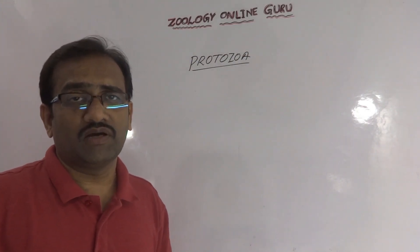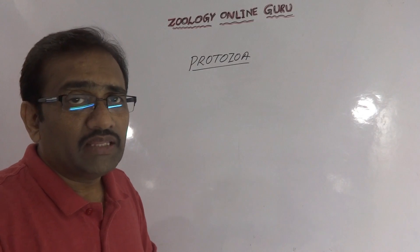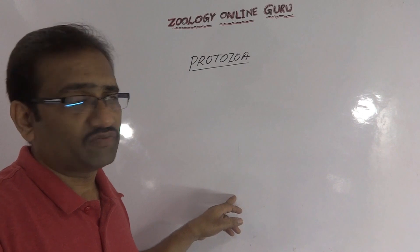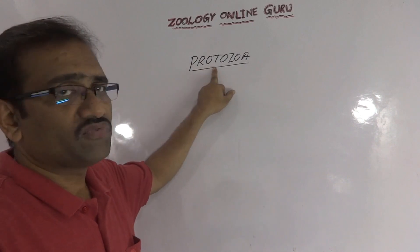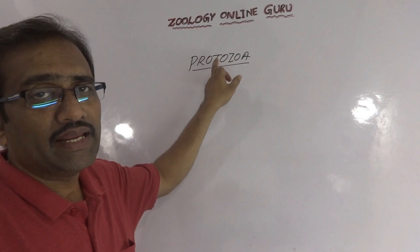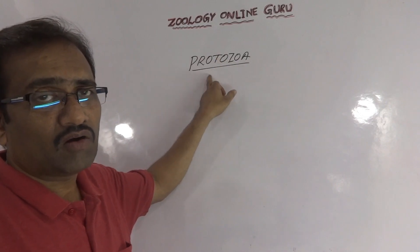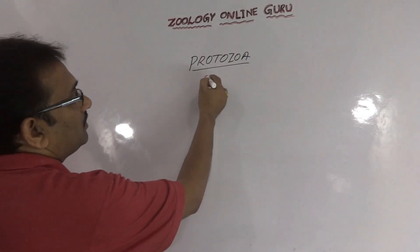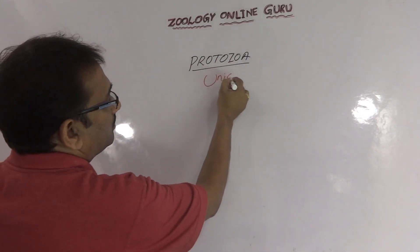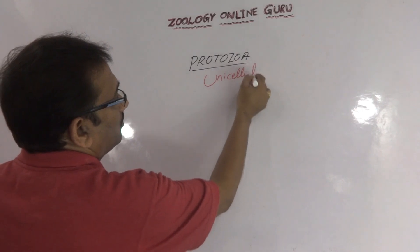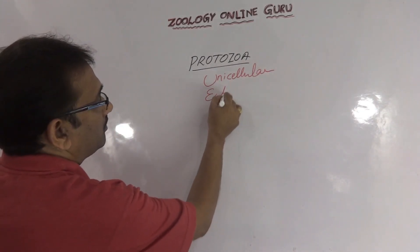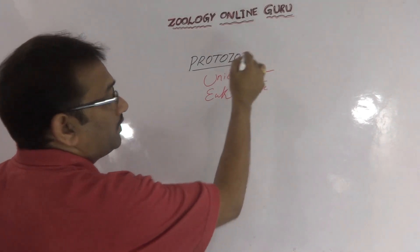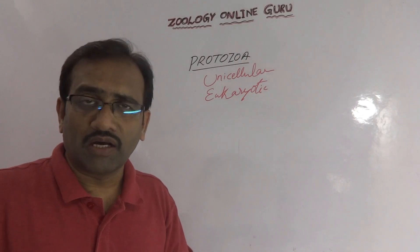Protozoa is one of the phyla in the invertebrates of the Protista kingdom in Whittaker's classification. Proto means first, zoa means animals — so we are calling them first animals, protozoans. What are these animals? These are unicellular eukaryotic organisms.